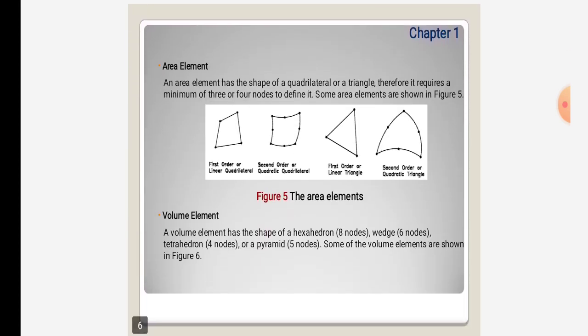Area elements have the shape of a quadrilateral or triangle. Therefore, they require a minimum of three or four nodes to define them. Some area elements are shown in the figure, like first order, second order, first order linear triangle, and second order quadrilateral triangle.